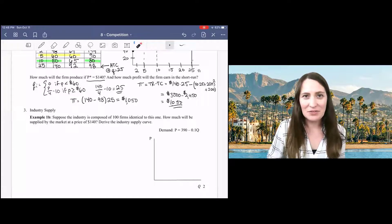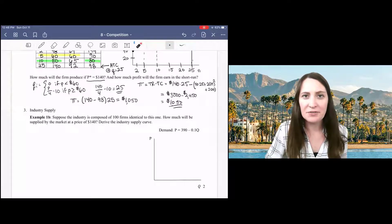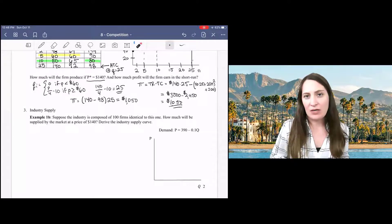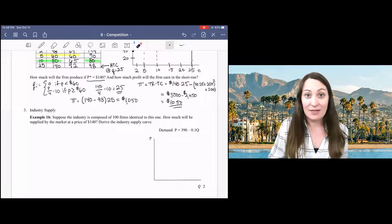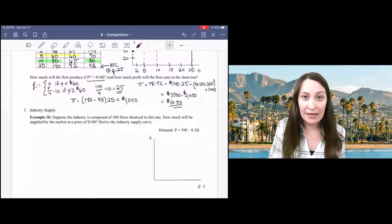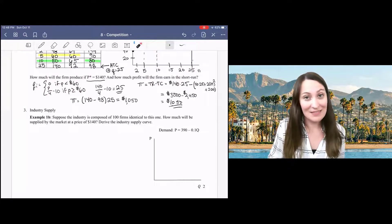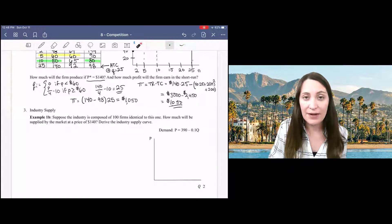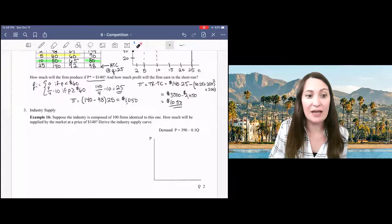Now that we've talked about the individual firm's problem, we're going to turn our attention to the market. So in a market, we have lots and lots of these individual firms. And for the sake of simplicity, we are going to assume that all the firms are identical. They all have the same cost curves, meaning that they all have the same supply function that we solved for in the last video.